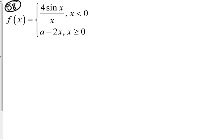In this section, for 57 through 60, it says find the constants A and B such that the function is continuous on the entire real number line.